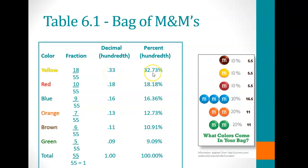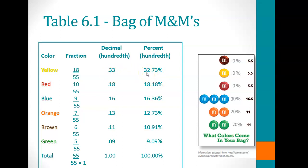But the percent is carried out a bit further. Actually, 18 divided by 55 is 0.3273, which when rounded to the nearest hundredth and converted to a percent — by moving the decimal two spaces to the right — is shown as 32.73%. So for each color, we show the number as a fraction, as a decimal, and as a percentage.